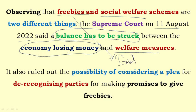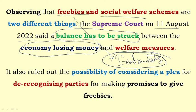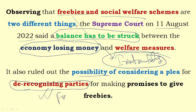Providing housing, treatment, and basic amenities is considered a social welfare scheme — it is for the welfare and uplift of society. The Supreme Court is today considering a plea for de-recognizing parties that make promises to give freebies, as such parties promising irrational freebies could be de-recognized.